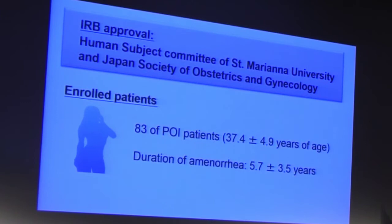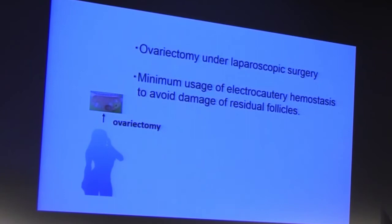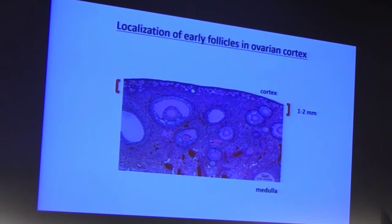We obtained IRB approval from the Human Subject Committee of our university and the Japan Society of OB/GYN. In our second published paper, we enrolled 83 POI patients with an average age of 37.4 years and a duration of amenorrhea of 5.7 years. The first clinical step is ovariectomy under laparoscopic surgery. An important point is to minimize the use of electric cautery hemostasis to avoid damage to residual follicles, which is feasible because POI ovaries have very little blood circulation.